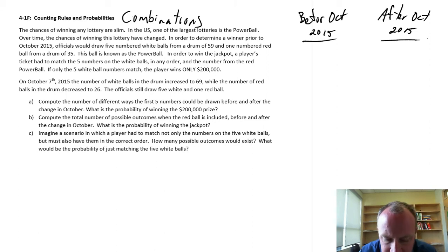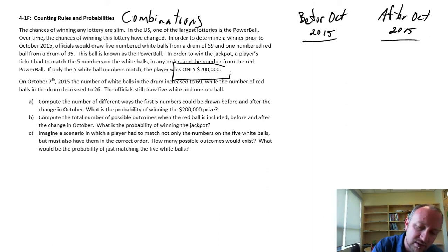So the first problem says, compute the number of different ways the first five numbers could be drawn before and after the change. What is the probability of winning this $200,000 prize? If you only match those five white balls, then you win $200,000. You only win the jackpot if you match those five white balls, plus the red Powerball. And so that's what we're going to calculate here in Part B.